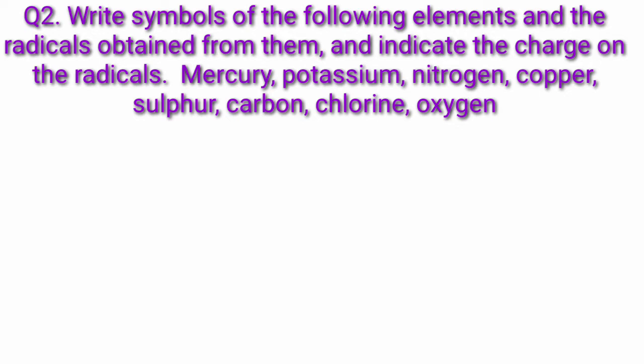Question 2: Write symbols of the following elements and the radicals obtained from them, and indicate the charge on the radicals — mercury, potassium, nitrogen, copper, sulfur, carbon, chlorine, oxygen. Answer: Mercury — symbol Hg, radicals Hg+, Hg2+, charge of radicals +1, +2. Potassium — symbol K.